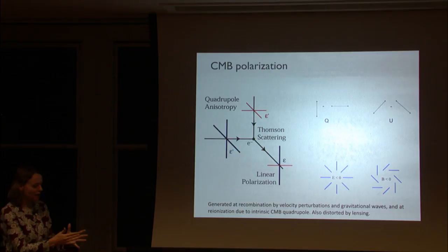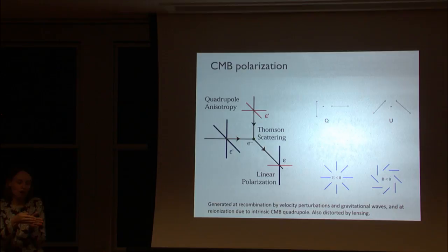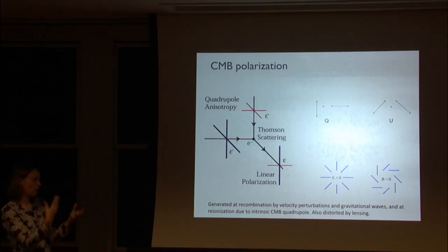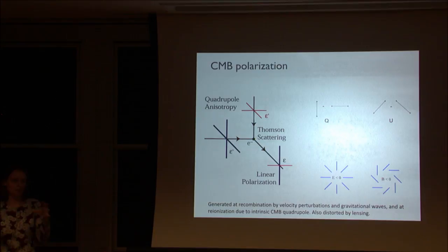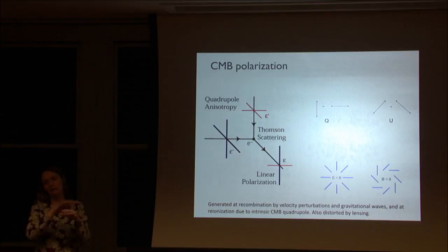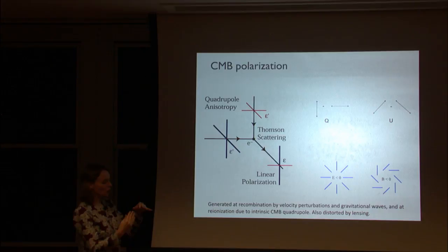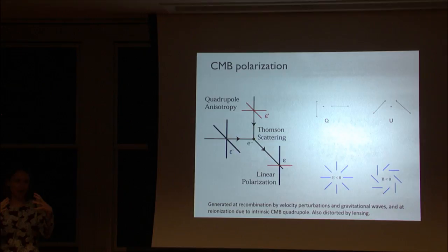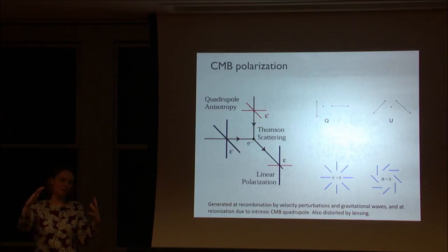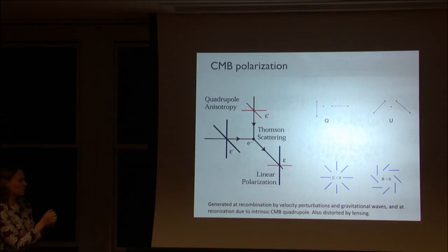This quadrupole pattern gets set up during recombination when the universe becomes neutral. The temperature anisotropy traces the density of photons at recombination, while the polarization is more or less tracing the velocity perturbations. You'll also get polarization if a gravitational wave was passing through, since that also generates a quadrupole pattern and thus polarization.